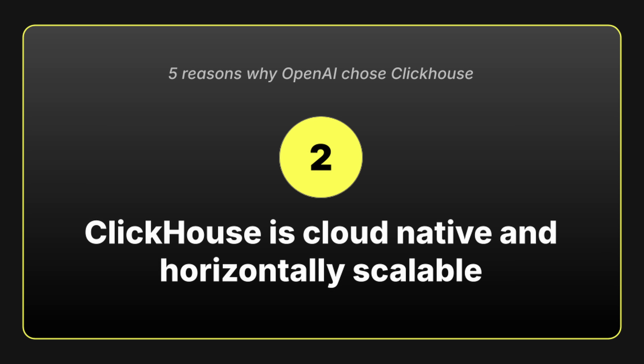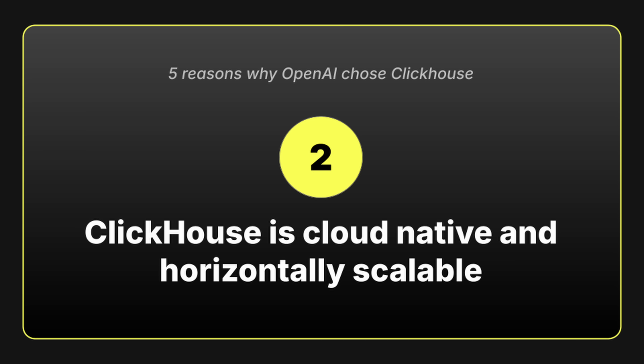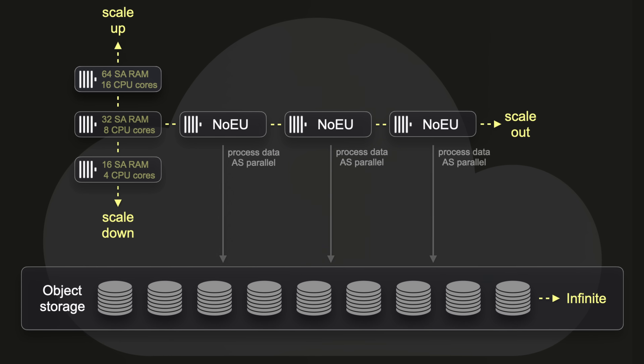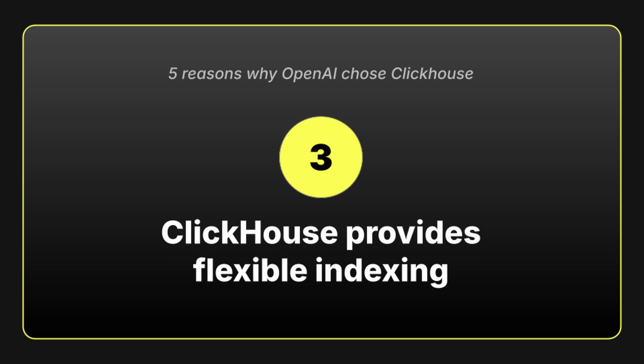Next, ClickHouse is cloud-native and horizontally scalable. That means as your data grows, you simply add more nodes and queries keep running fast, instead of slowing to a crawl as they often do with traditional databases. Of course, scaling out is only part of the problem — you also need queries to stay fast as the data set explodes.